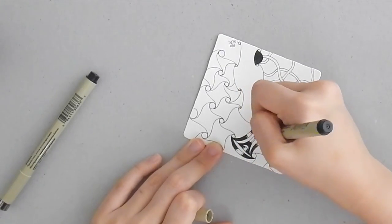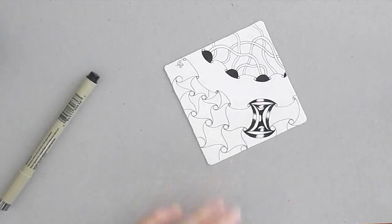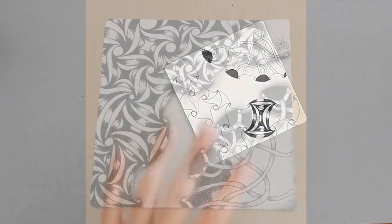So that's one box done. I'm then going to fill in the rest of the tile with striping.